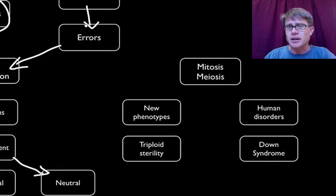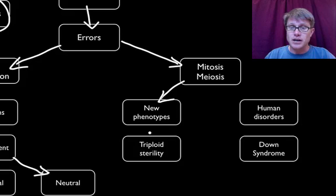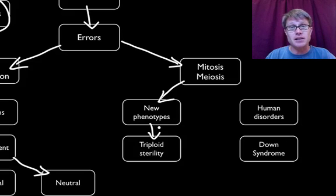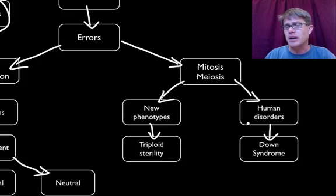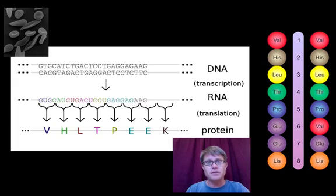There are other ways we can get errors in our DNA as well. We can have errors in the cell cycle — when we're actually making copies of cells, or when we're making sex cells. That can eventually lead to new phenotypes, which can be good — I'll talk about bread wheat — and can be bad — I'll talk about a mule. It can also lead to human disorders. A famous one is Down syndrome. These are all simply changes in the DNA that eventually cause changes in the phenotypes.